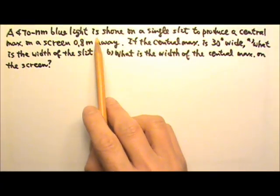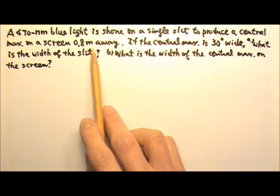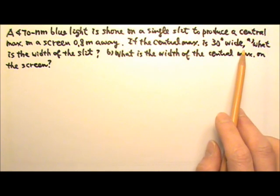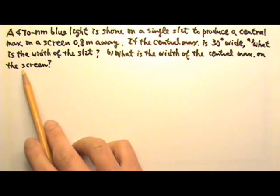A 470 nm blue light is shown on a single slit to produce a central maximum on a screen 0.8 m away. If the central maximum is 30 degrees wide, what is the width of the slit? What is the width of the central maximum on the screen?